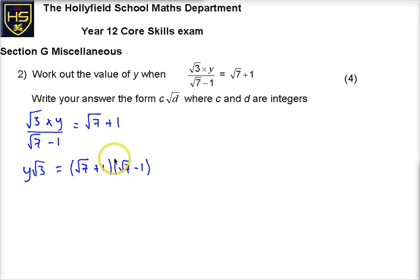So I've got a double bracket here, so I've got y root 3 is equal to root 7 times root 7 is root 49, which is just 7. Then I'm going to get plus root 7 minus root 7 from those multiplications, and then plus 1 times minus 1 is minus 1. You can see that those cancel, so I get y root 3 is equal to 7 minus 1, which is 6. Wow, suddenly it's a little simpler.